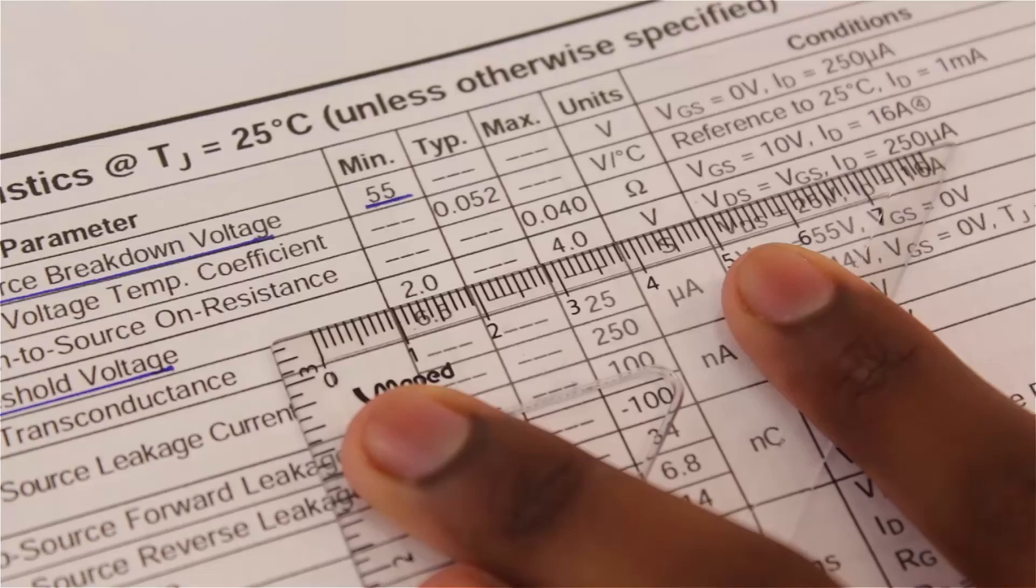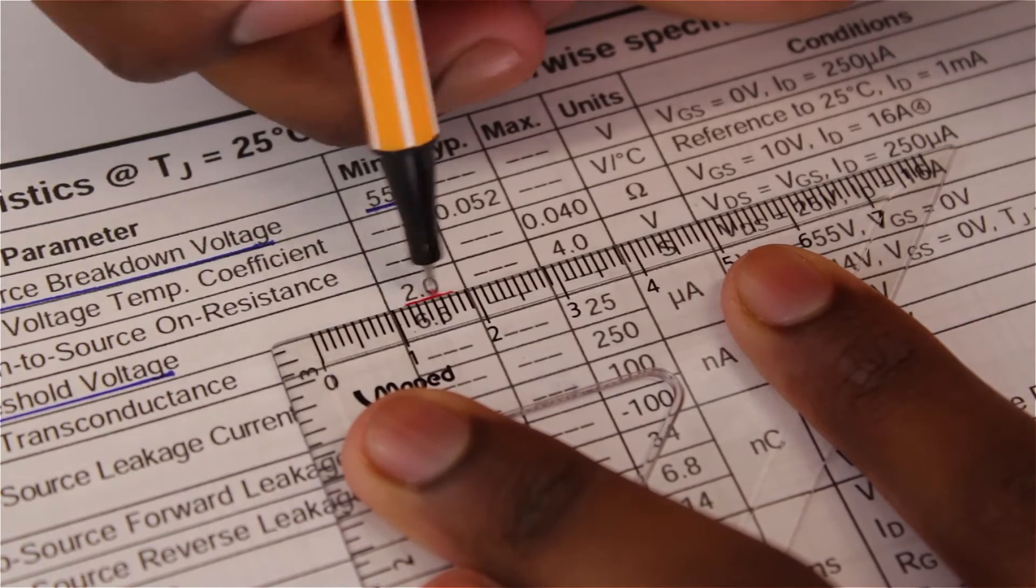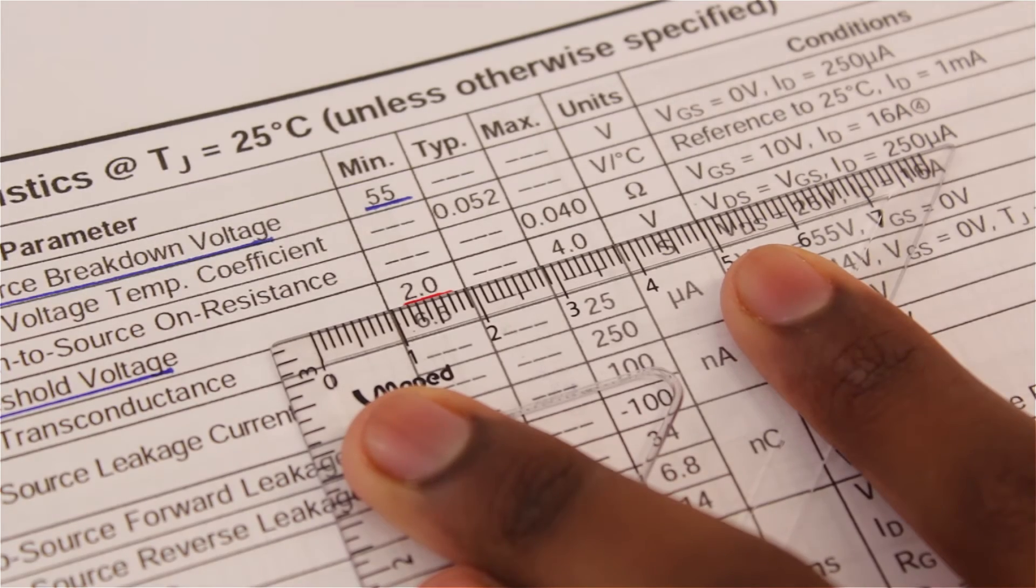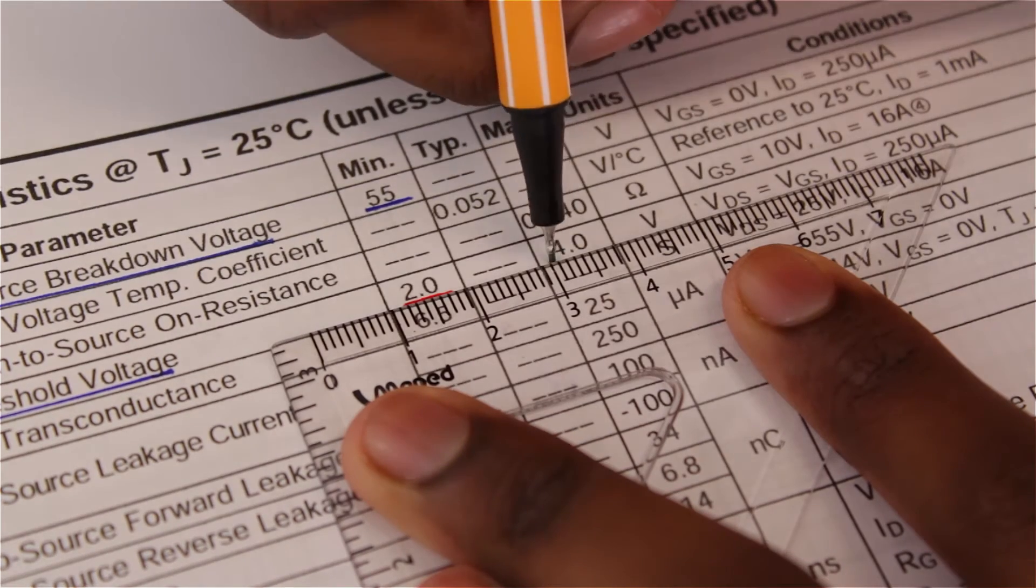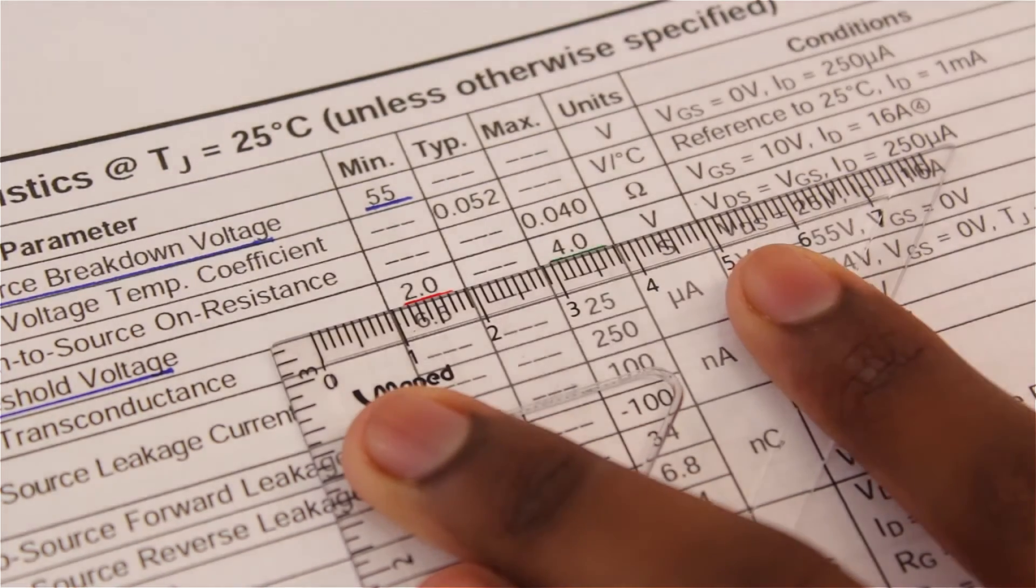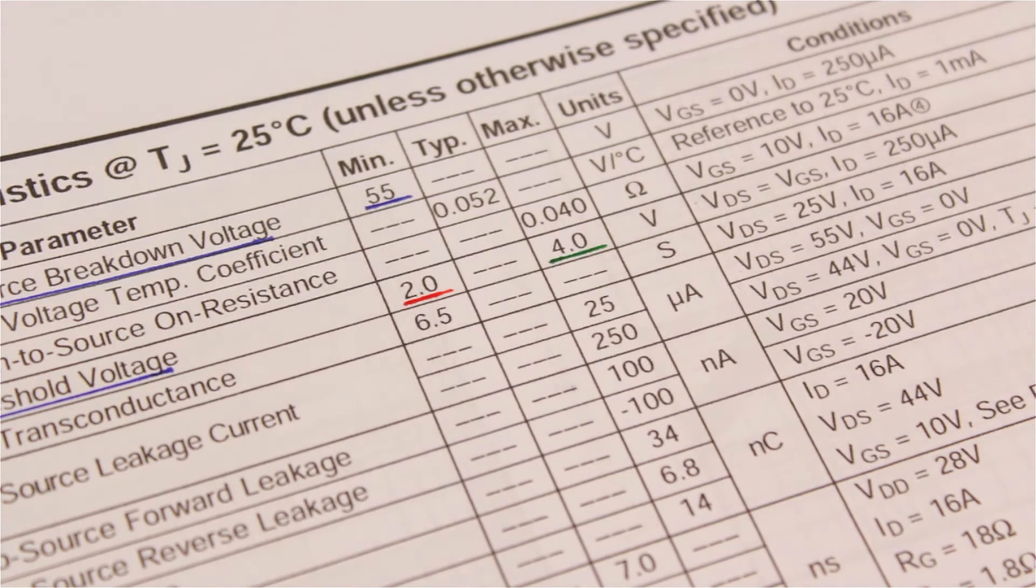A MOSFET has an internal variable resistance. So at 2 volts, this MOSFET really can't control that much current. But at 5 volts, it can control even more. And at 10 volts, it hits its maximum amount of current it can handle, which is 29 amps.